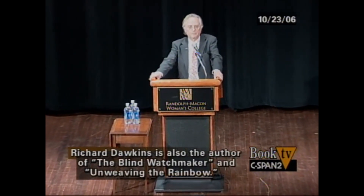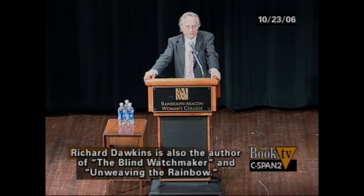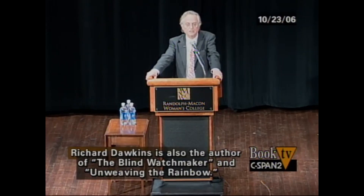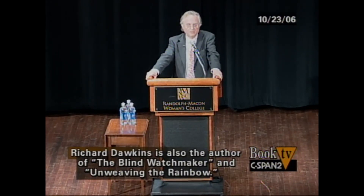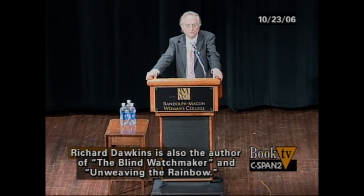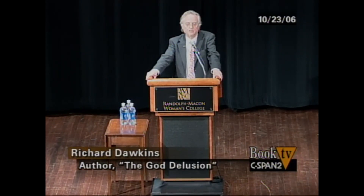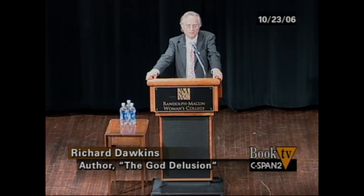There is a certain chance element in it. Mutation is a process of random chance — it's random with respect to improvement. Things don't tend to get better as a result of mutation. The important step in the Darwinian theory of evolution is natural selection. Natural selection is a non-random process — it is the non-random survival of randomly varying genetic codes.